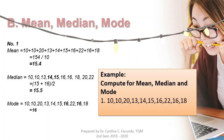The mean is 15.4. For the median, you need to arrange the numbers from lowest to highest: 10, 10, 13, 14, 15, 16, 16, 18, 20, and 22. Since there are 10 numbers, you take the 5th and 6th values, which are 15 and 16. So 15 plus 16 divided by 2 equals 15.5. The median is 15.5.